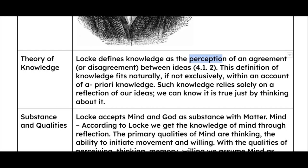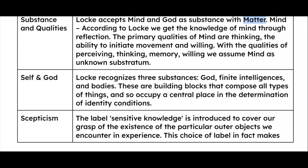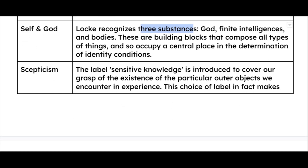So this was about John Locke — his theory of knowledge, where we talked about perception; his substance and qualities, where we talked about mind, God, and matter; self and God, covering three substances: God, finite intelligence, and bodies; and skepticism, where Locke was an anti-skeptic.